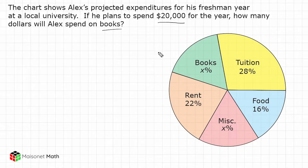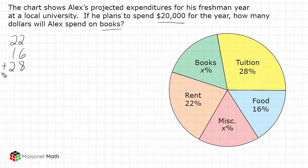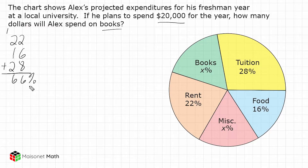With any pie chart, we know that the sum of all of the parts is 100%. So let's start by adding up the percentages that are given. He spends 22% of his expenditures on rent, 16% on food, and 28% on tuition. When we add all of that up, we get 66%. So we know the remaining pieces have to add up with 66% to total 100.